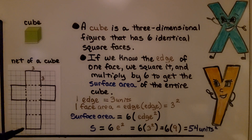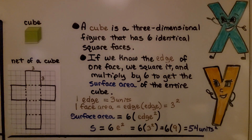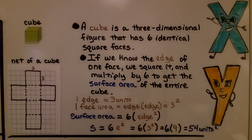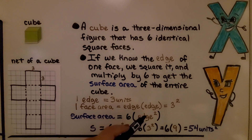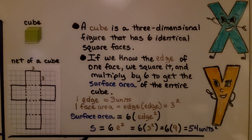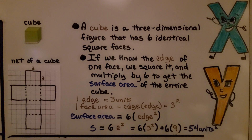One edge equals 3 units. The area of one face equals edge times edge, which is 3 squared, equal to 9. The surface area equals 6 times the edge squared. So S equals 6 times 3 squared, which is 6 times 9, which is 54 units squared.